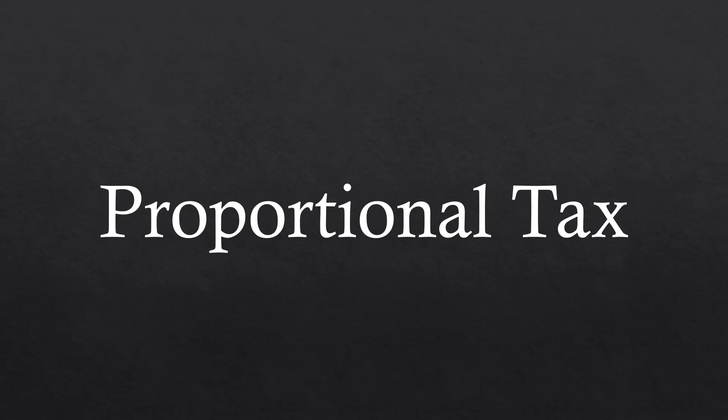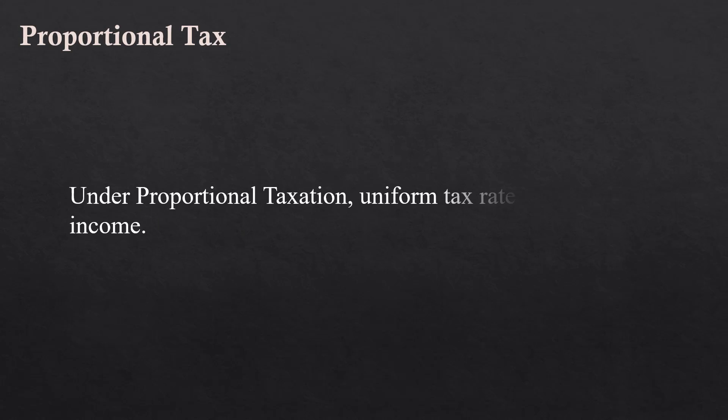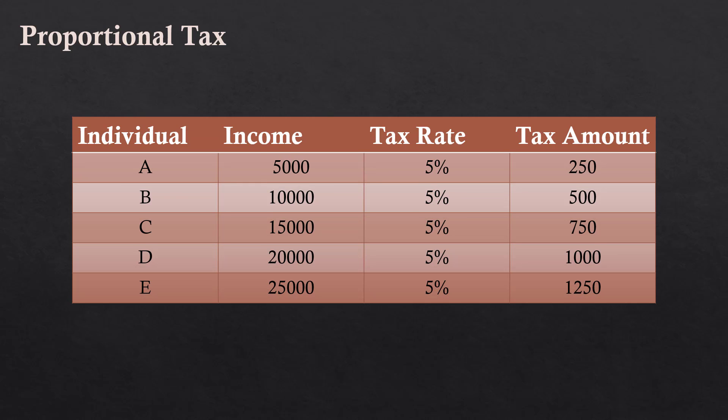Proportional Tax. Under Proportional Tax, uniform tax rate is applied on income. Look at this table. Tax rate doesn't change with income. The rate of tax is fixed in terms of certain percentage. Individuals' income may be high or low, but each one has to pay tax at a fixed rate.